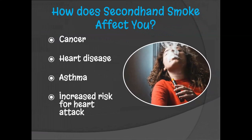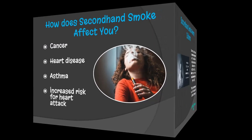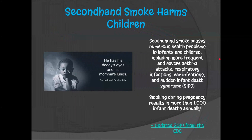How does secondhand smoke affect you? Even as a non-smoker, it carries many of the same risks: cancer, heart disease, asthma, and increased risk for heart attack are all very common side effects. It most certainly affects children — secondhand smoke causes numerous health problems in infants and children, including asthma attacks, respiratory infections, ear infections, and even sudden infant death syndrome. Smoking during pregnancy can cause more than 1,000 infant deaths a year. As of 2019 statistics in the United States, this is all preventable if people just don't smoke around children.